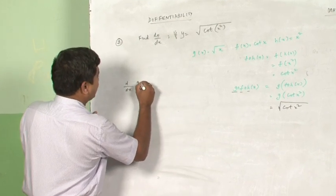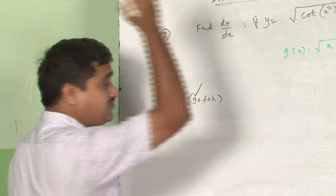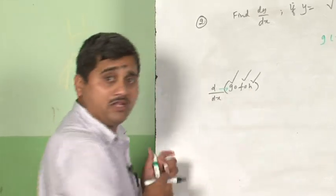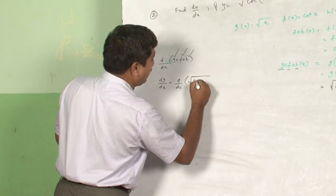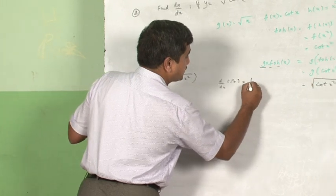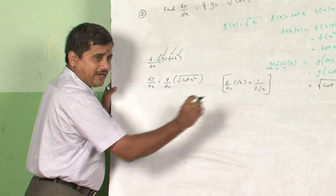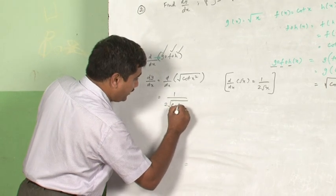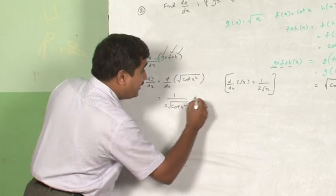When computing d/dx of g∘f∘h, the first function encountered is g, then f, then h — so you differentiate in that order. dy/dx = d/dx of √(cot(x²)). Using the formula d/dx of √x = 1/(2√x): forget that it is cot(x²), consider it as x, and directly write 1/(2√(cot(x²))). Since the argument is not actually x, that function must also be differentiated.